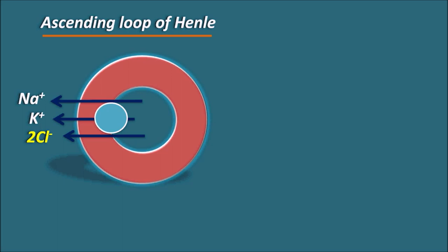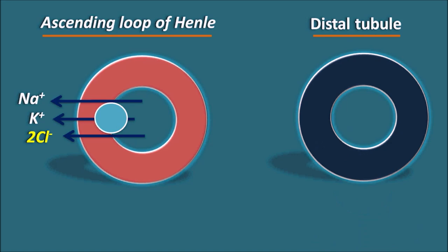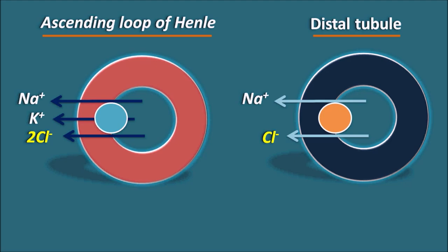At the distal tubule, a sodium-chloride exchange pump is present, responsible for absorption of sodium along with chloride. Thiazide diuretics inhibit this pump at the distal tubule. In this way, loop diuretics and thiazide diuretics act at the loop of Henle and distal tubule respectively, inhibiting sodium absorption by blocking the respective pumps.